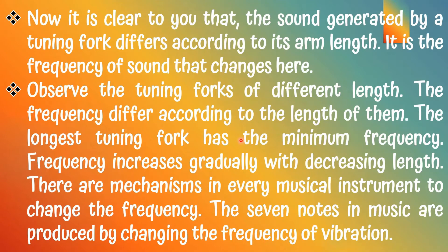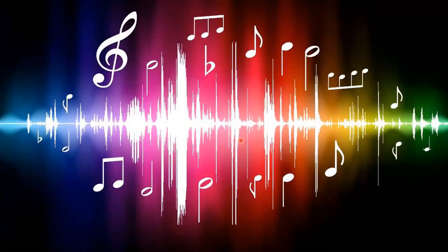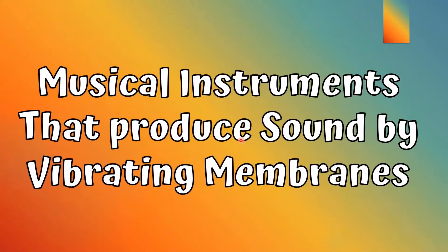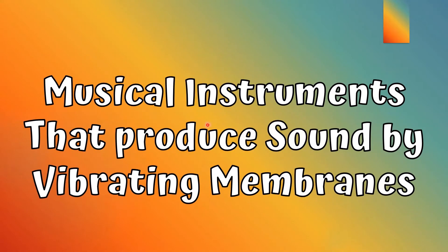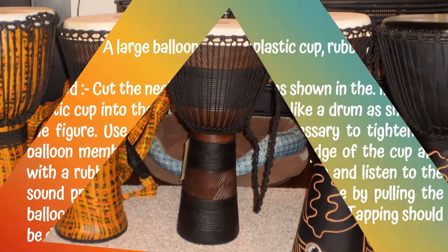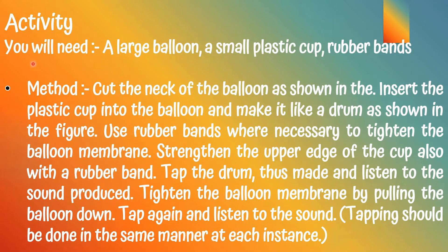Now let's look at musical instruments that produce sound by vibrating membranes. Equipment needed: a large balloon, a small plastic cup, and rubber bands. The method: cut the neck of the balloon, insert the plastic cup into the balloon and make it like a drum. Use rubber bands to tighten the balloon membrane and straighten the upper edge of the cup with a rubber band. Tap the drum and listen to the sound produced.